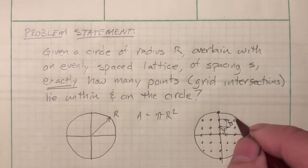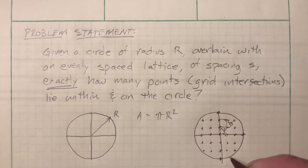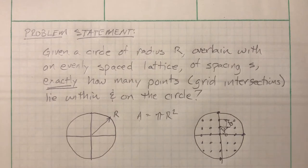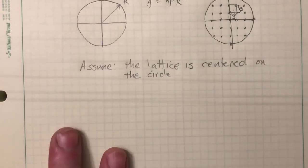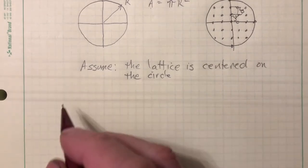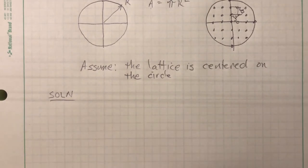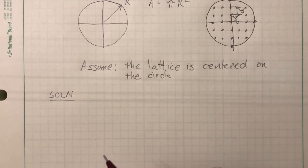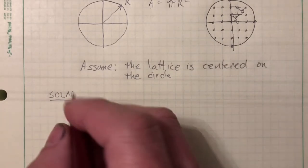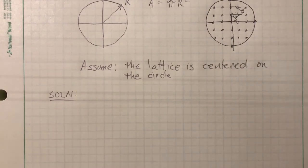Sometimes, for big enough circles, there will be grid points that fall directly on the circle diameter. The solution is going to work this way: we mechanize a scheme to count the number of points along each chord of one quadrant, then multiply the answer by four to calculate the total number of points.